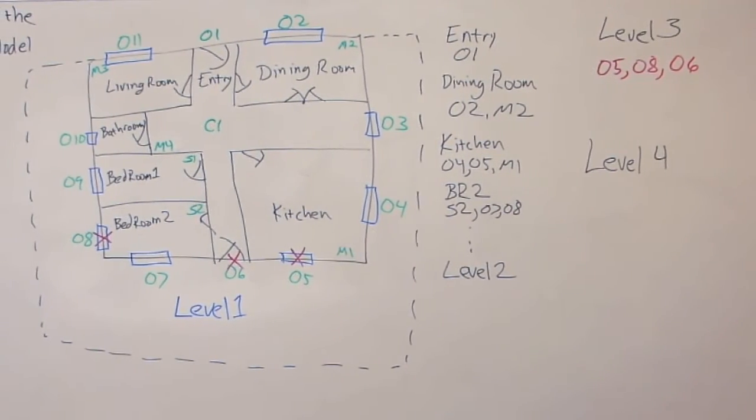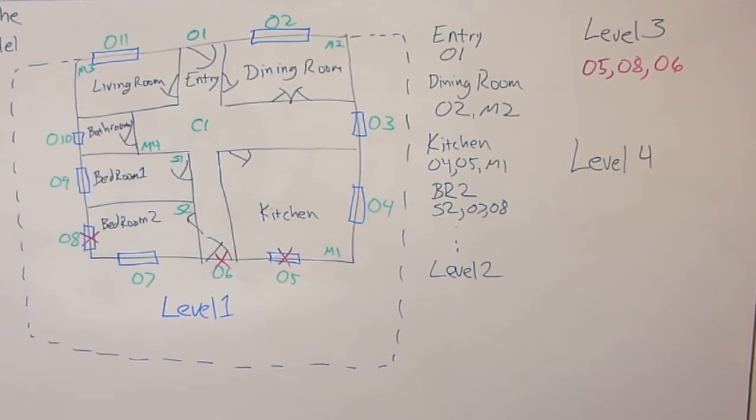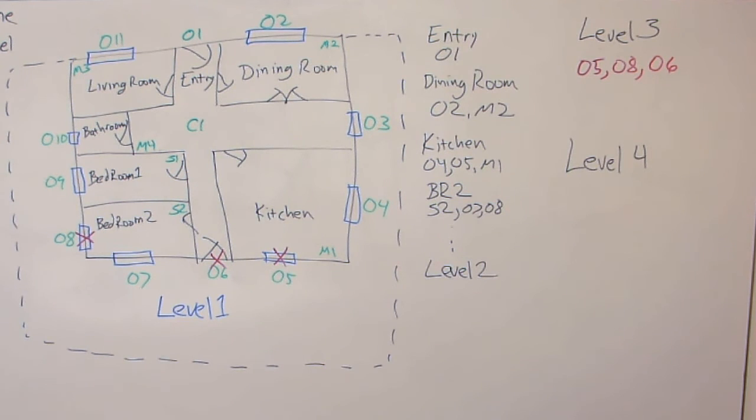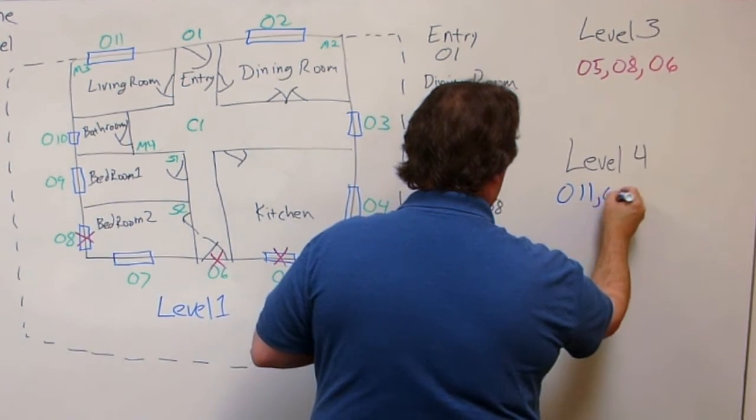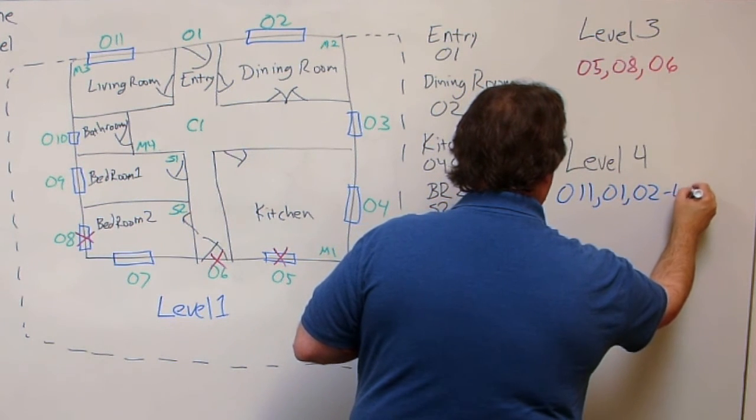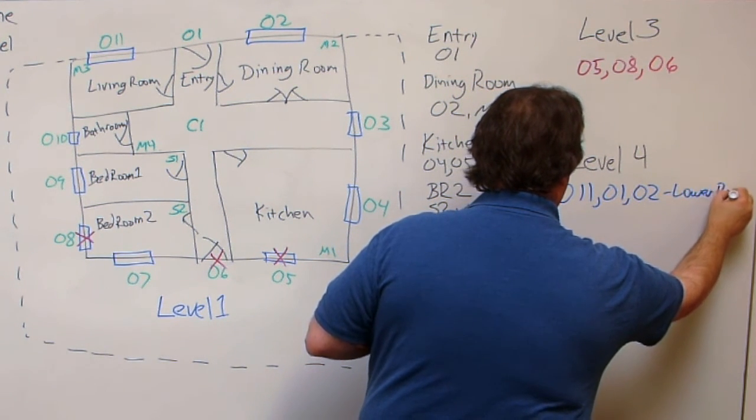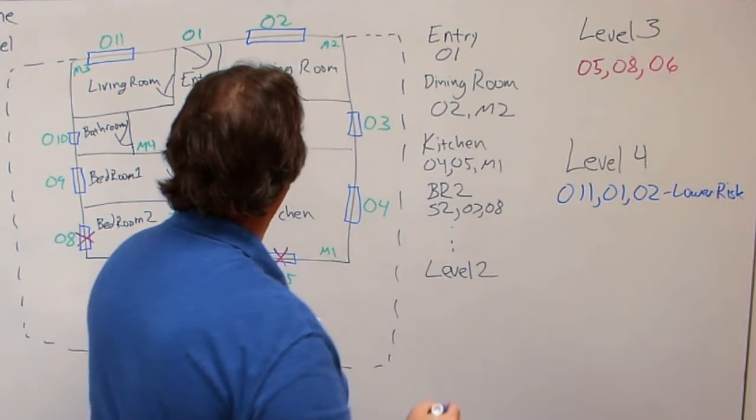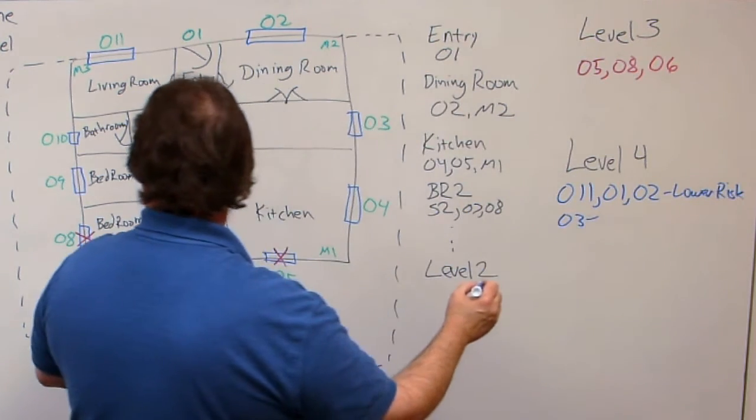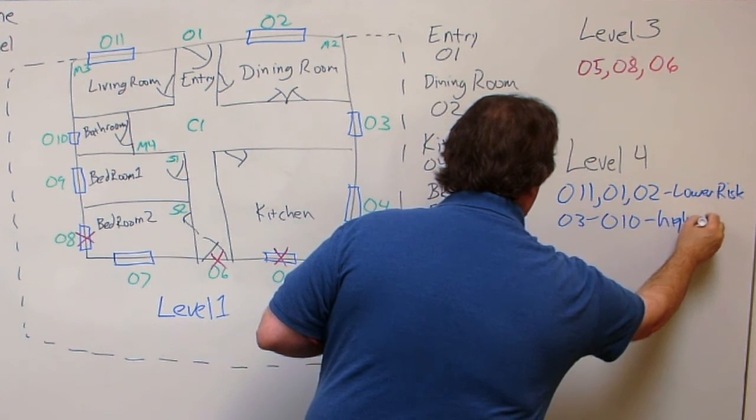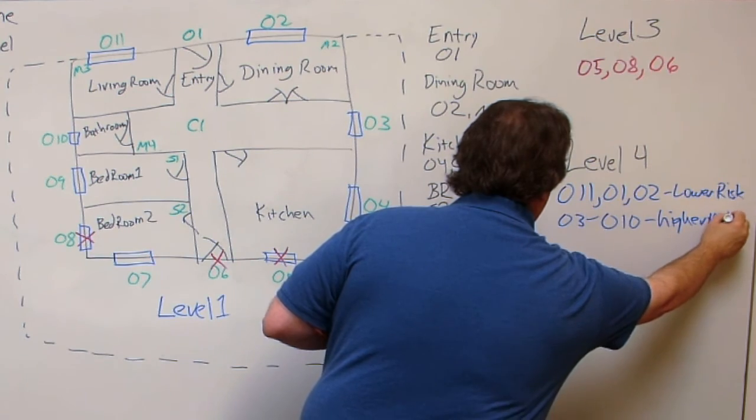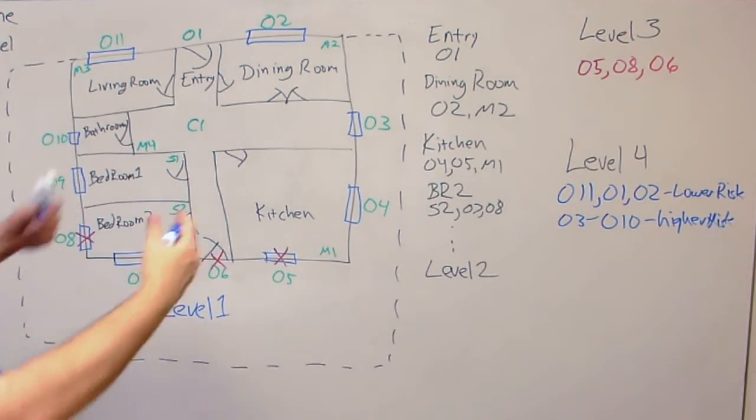So level four might tell us that we need to categorize some of these sensors differently from the others. One of the things we can say is that O11, O1, and O2 at the front of the house are low risk. But O3 through O10 are higher risk because they're hidden behind the privacy fence.